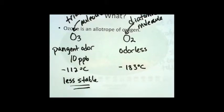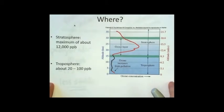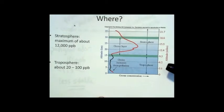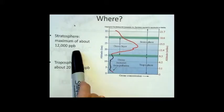The next question is, where do we find ozone? Well, we find ozone both in the troposphere and in the stratosphere. In the troposphere, the concentrations are lower than in the stratosphere.